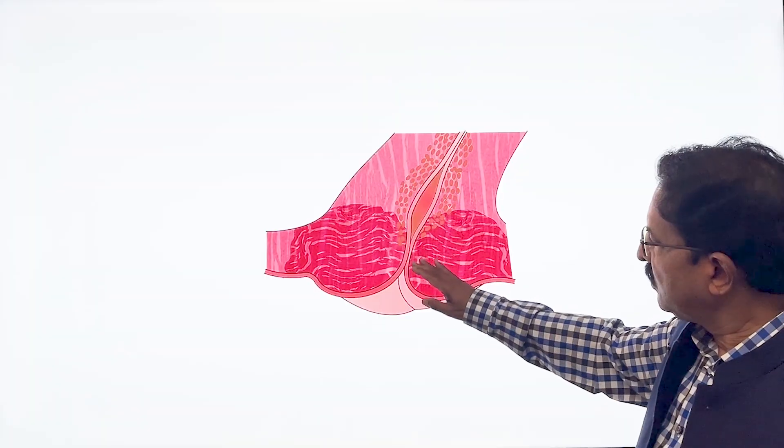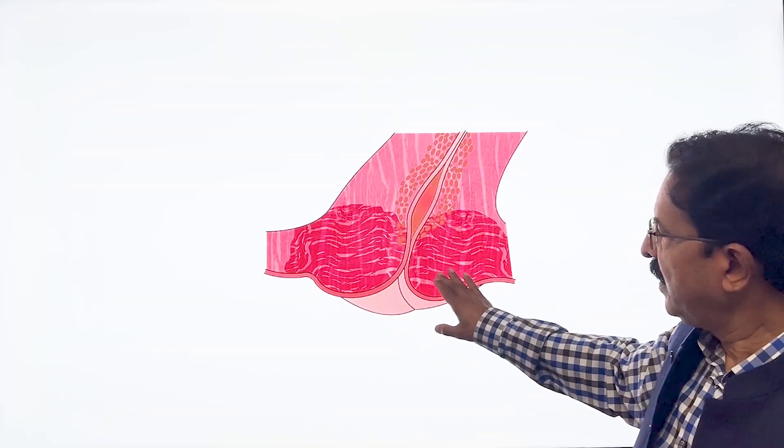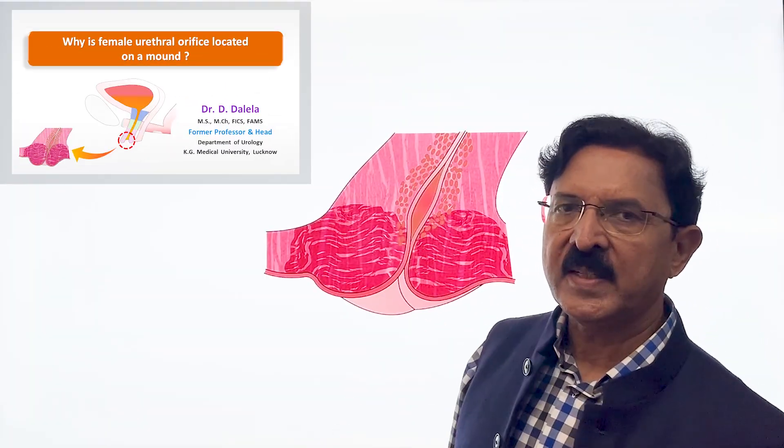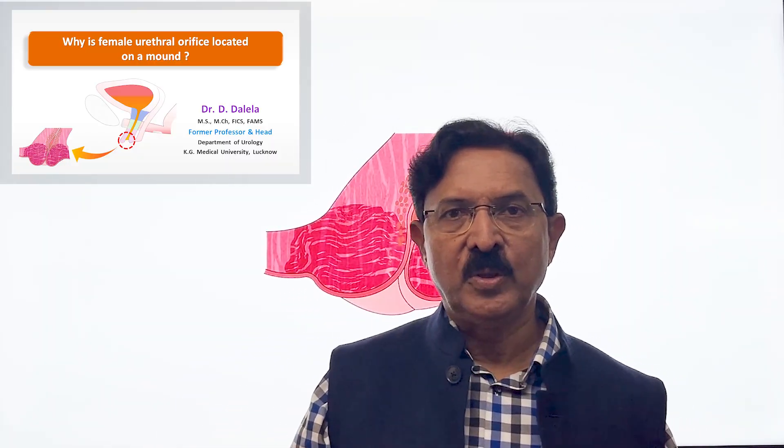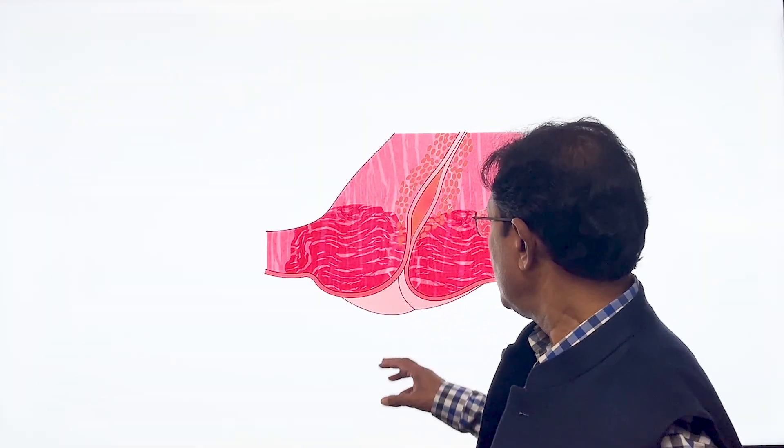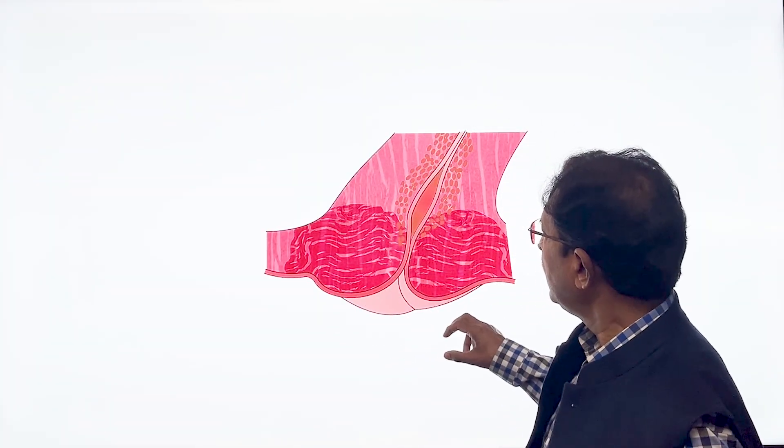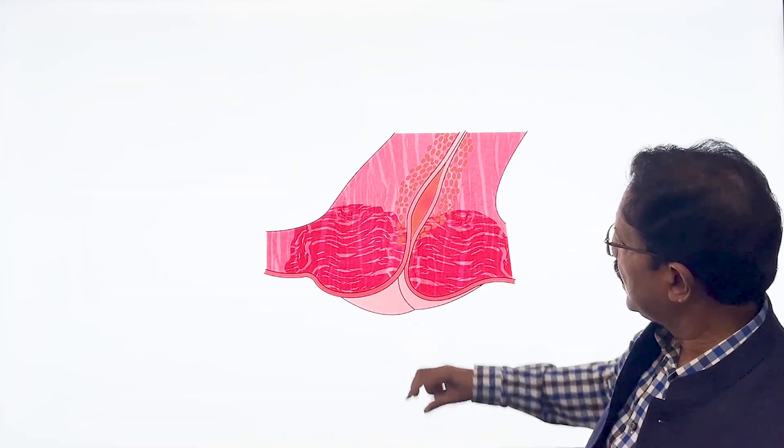And then when you come further down towards the orifice, you will recall in one of my presentation earlier, I talked to you about the location of the urethral orifice at the urethral mound in the female vestibule. So this is the mound and this is the urethra coming distally.